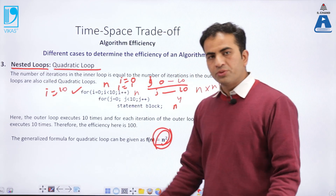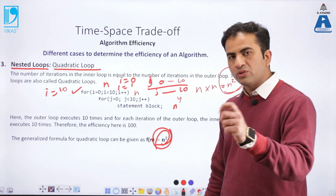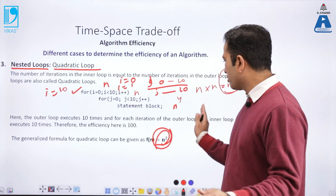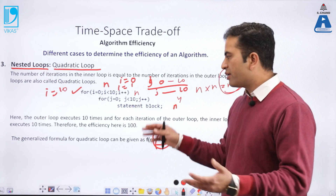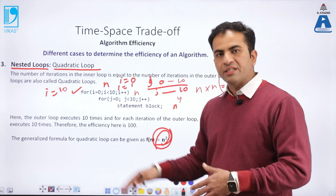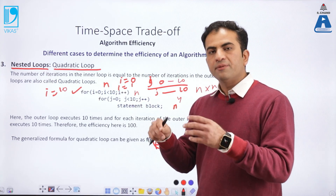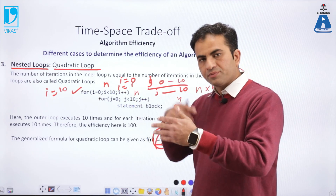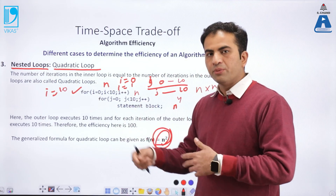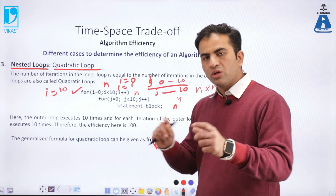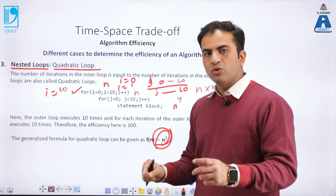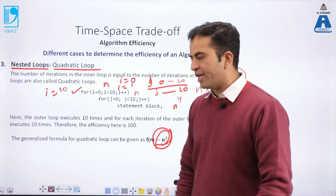It depends on the loop-to-loop behavior, how the loop is working. It is not always the case that if there are three nested loops it becomes n³. It depends on the loop behavior — how the loop is working.